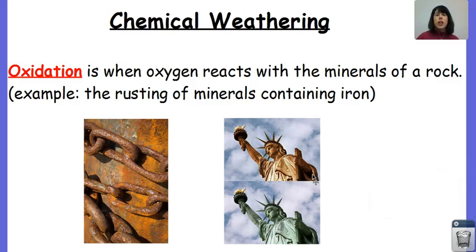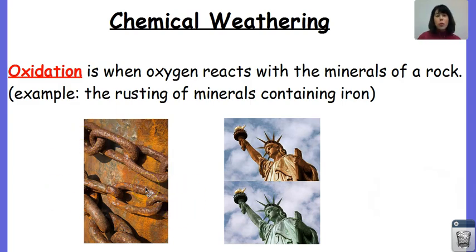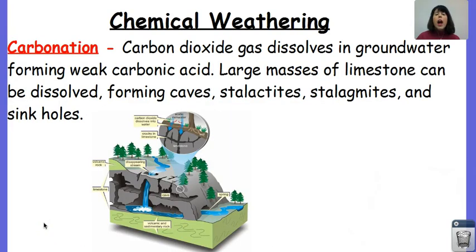Chemical weathering, as we said before, involves a change in composition. Our first one is oxidation — when oxygen reacts with the minerals of a rock, for example the rusting of minerals containing iron. The iron chain on the left has now rusted and broken up. Or consider the Statue of Liberty: it is a natural copper color, but when the copper is exposed to oxygen, it gets this greenish color. Another type of chemical weathering is carbonation: carbon dioxide gas dissolves into groundwater, forming weak carbonic acid. This carbonic acid can eat away at minerals such as calcite and dolomite, which are found in limestone. As a result, this can create limestone caves, stalactites, stalagmites, and sinkholes.